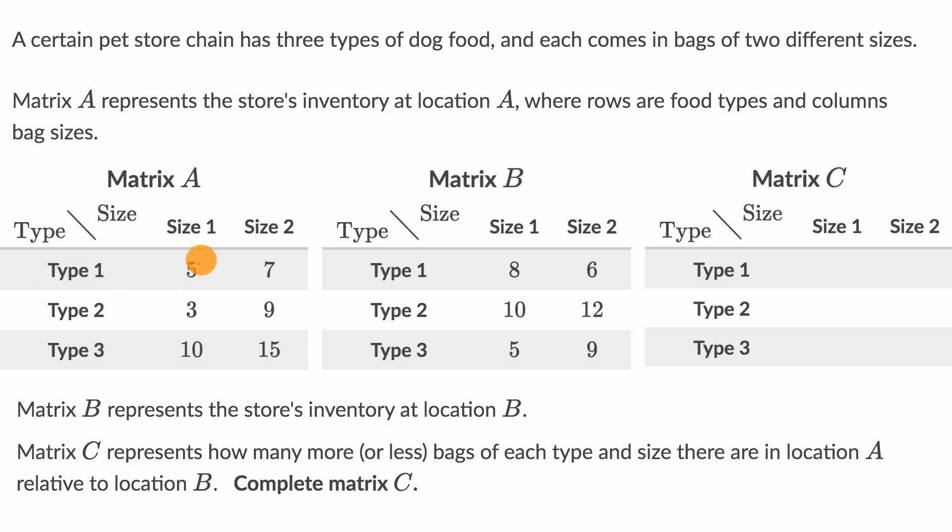For example, type one dog food in size one, they have five bags of that, while type two dog food in size two, they have nine bags of that. All right, that's fair enough.